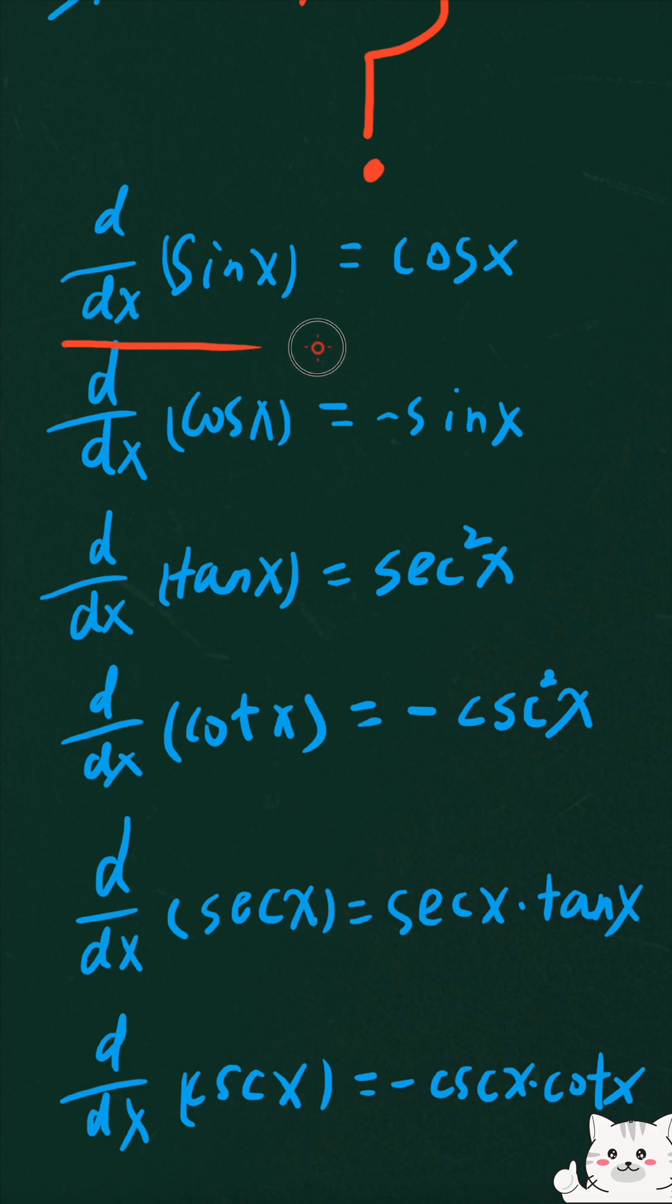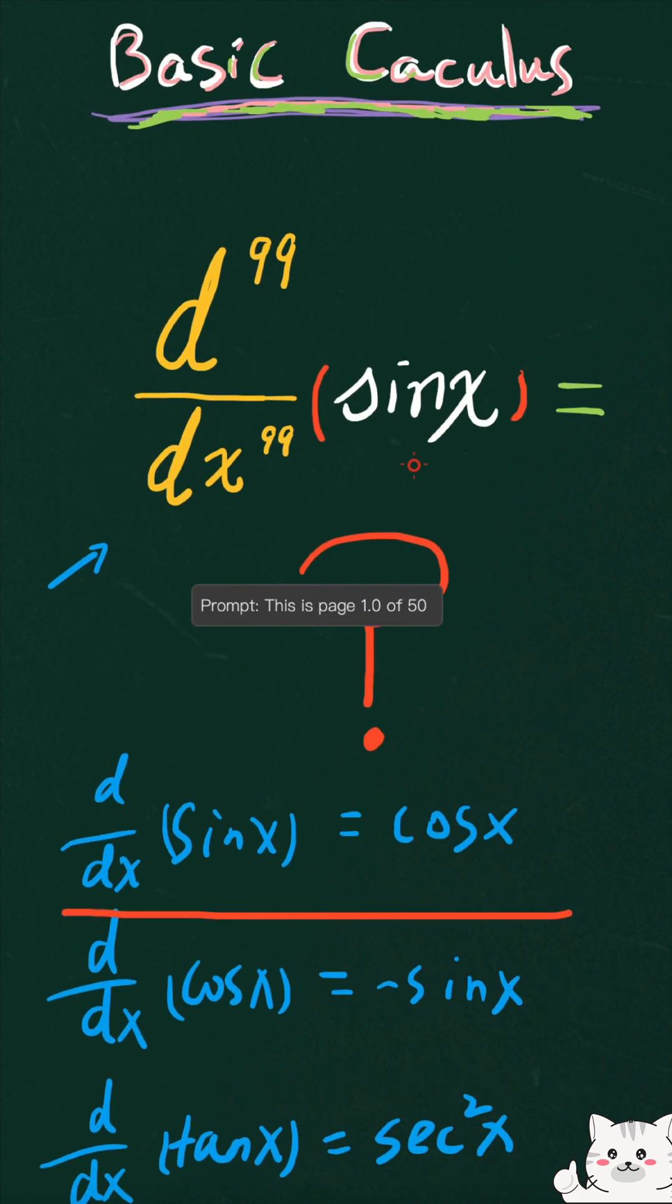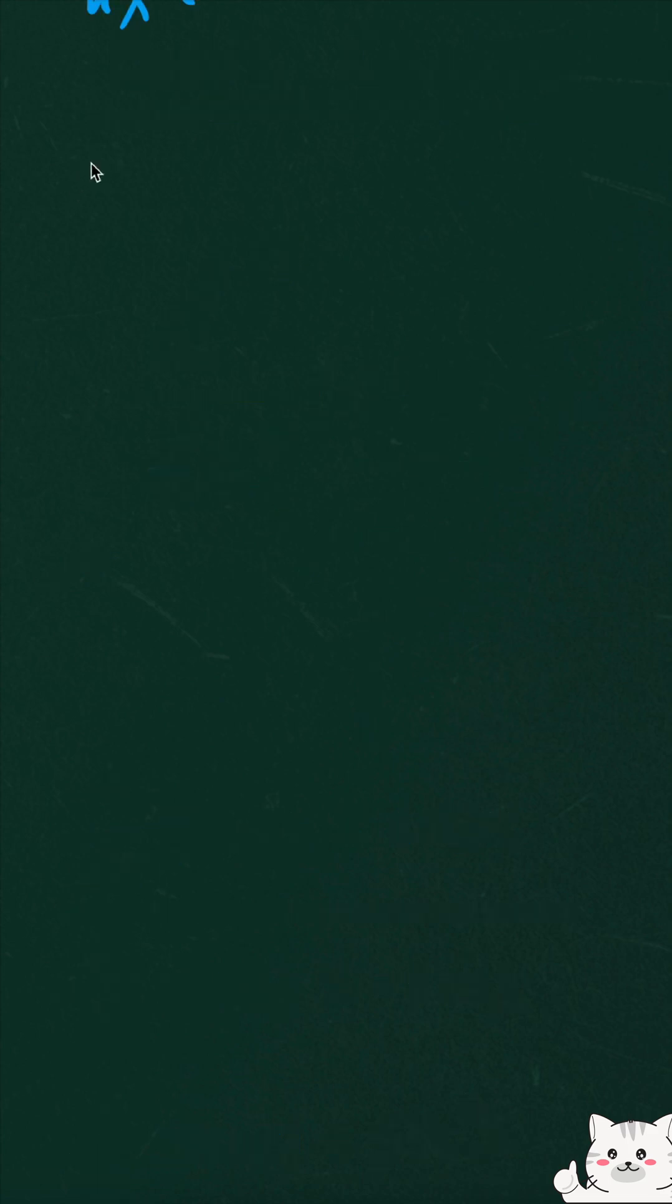The derivative of sine x is cosine x, because we have this derivative over here, sine x. But it asks us to find the 99th derivative. We're going to start from sine x, which is the original function, and the first derivative of sine x is cosine x.